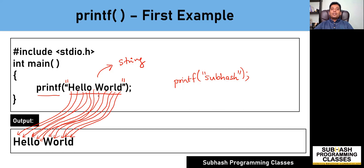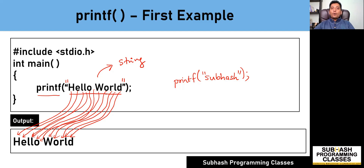So if you want to print certain characters on the screen, those characters must be written in between a pair of double quotes as a string and passed as input to the printf function. Now, what if I want to print integer type of data or floating point type of data? In that case, I will have to make use of something called format specifiers, which I'm going to explain in the next slide.